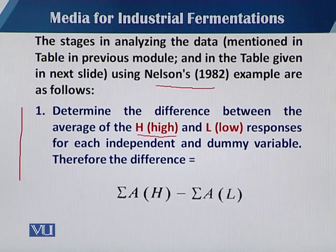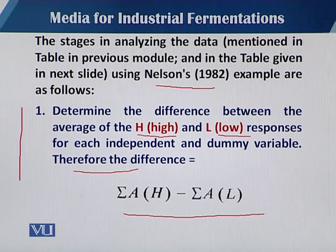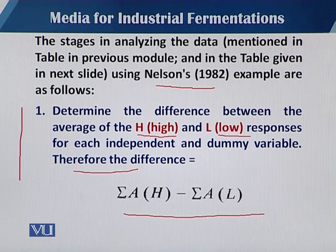The difference can be calculated using this formula: the summation of A for all high value responses minus the summation of A for all low value responses.